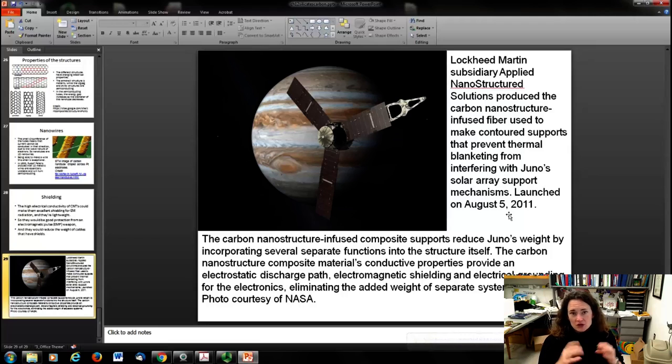Lockheed Martin, their subsidiary Applied Nanostructured Solutions, produced the carbon nanostructure infused fiber that was used to make the contour supports that prevent thermal blanketing from interfering with the Juno solar array. This was launched in August 5th, 2011, and it has a carbon nanostructure infused composite material that supports and reduces Juno's weight because of the lightweight of the carbon. It also provides an electrostatic discharge path, shielding and grounding for the electronics with a very low payload, which is really important to NASA.